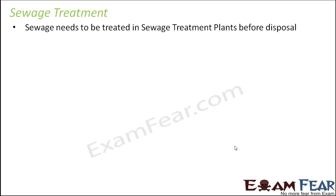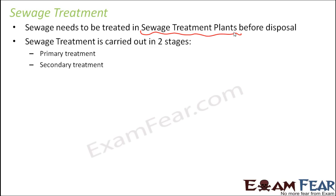The solution is sewage treatment. We need to treat sewage in sewage treatment plants before disposal so that its polluting effects get reduced significantly. This entire process of sewage treatment takes place in two major stages: primary treatment and secondary treatment. Microbes play a very important role in this sewage treatment process.